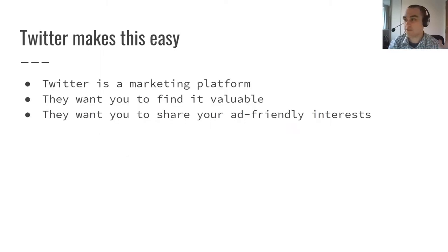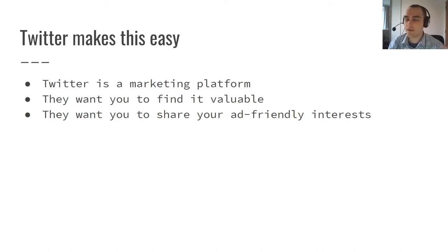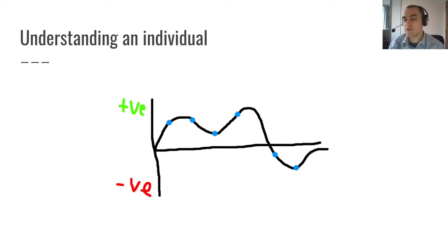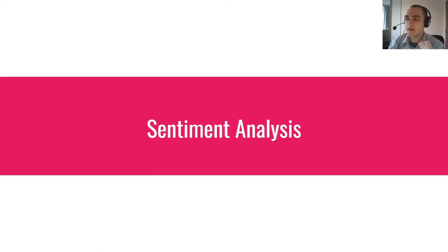Twitter is a marketing platform — they want users to find it valuable and encourage you to share how you feel. This is great from a social science perspective, though maybe not from a social perspective. Realistically, with a little Python we could target an individual by name, sample all their historic tweets, search for keywords associated with veganism or any other topic, and analyze the sentiment of those tweets over time. With some smoothing, we can visualize someone's growing opinion of something.